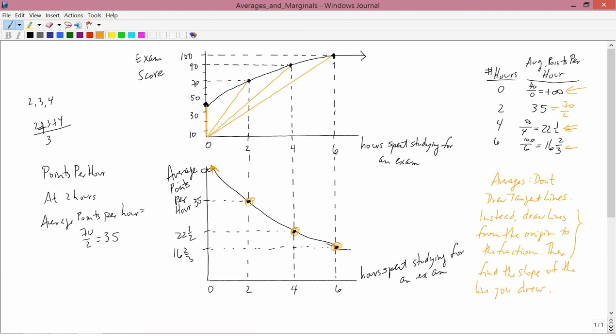We're now going to put together the two mathematical concepts that we just learned about. First we learned about marginals, then we learned about averages. So I'm going to use the same graph that I had before of hours spent studying for an exam on the horizontal axis and exam score on the vertical axis to show how you can put marginals on the same graph as averages and compare them.